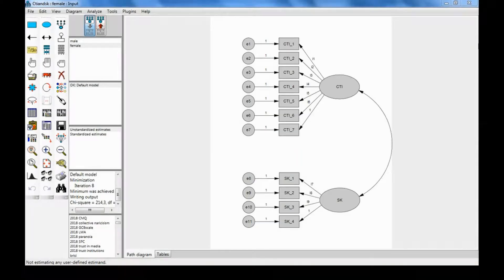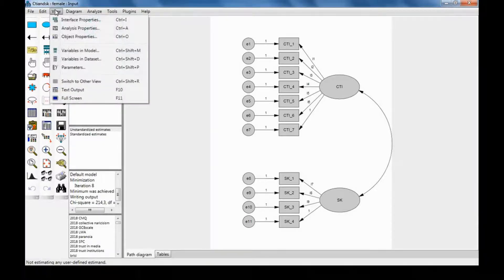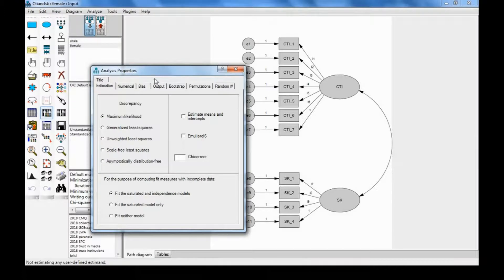To test for scalar invariance, we need to constrain the item intercepts to be equivalent across groups. But before we do that, we first need to tell AMOS that we want the item intercepts to be estimated. So we'll go to View, Analysis Properties, and on the Estimation tab, we're going to click Estimate Means and Intercepts.